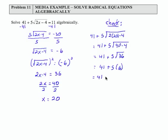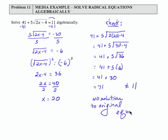So 41 plus 30 equals 71. Well, this does not equal 11, which was what it should have equaled. Therefore, there is no solution to the original equation.